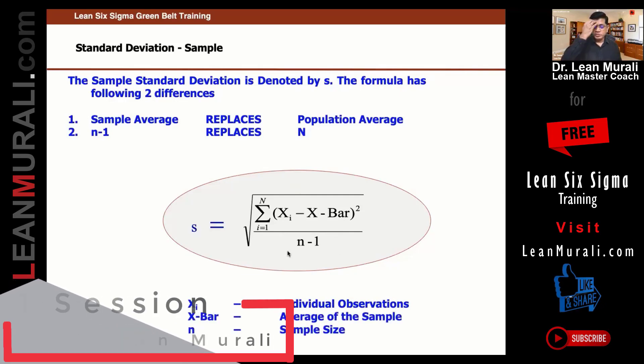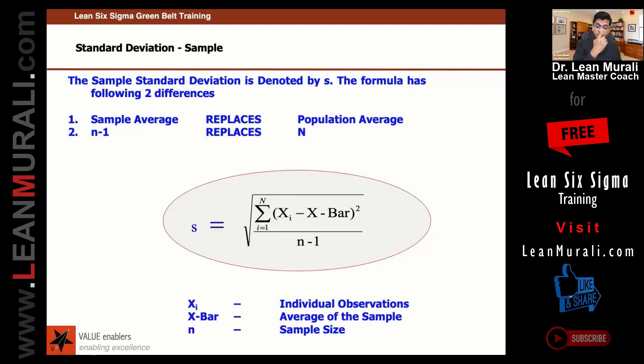Xi are individual observations, x̄ is the average of the sample, and n is the sample size. What I mean by Xi is x1, x2, x3, x4. If there are 10 biscuits—first biscuit, second biscuit, third biscuit, fourth biscuit—x̄ is the average of all the biscuits, and n is the sample size, which is 10 biscuits.